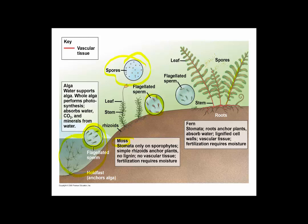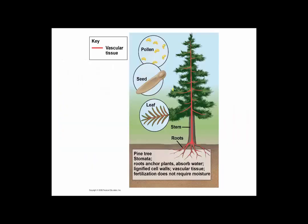Primitive seedless vascular plants, such as ferns, can be larger because they have actual roots. They have vascular tissue to carry resources around in their body. However, they are kind of tied to water by needing environmental water to effect sexual reproduction. Seed plants are definitely vascular and they have seeds, which are baby plants with some nutritive tissue and a coat. Details coming soon.